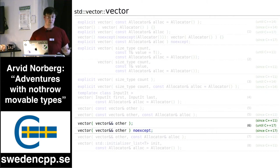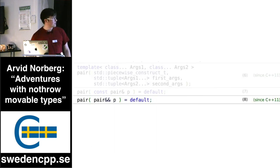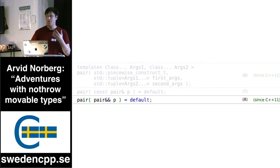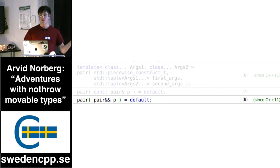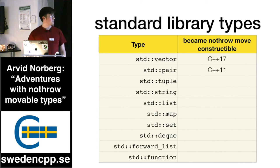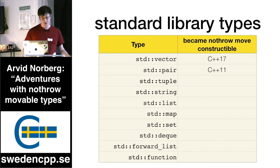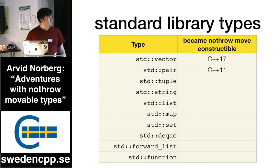I was curious what other standard templates do. `std::pair` just uses `= default`, which is very clever, because whatever the member types first and second are, it will deduce whether those are nothrow constructible or not. So I created a little survey of common standard types when they became nothrow move constructible. Vector: C++17. Pair: C++11, because it was simple. Tuple: just like pair, also uses `= default`. String: C++11.